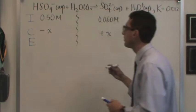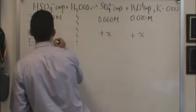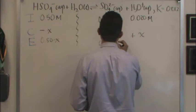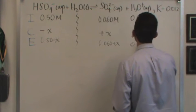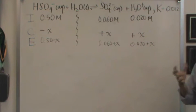The E line is just the sum of the I and the C lines. So I'm just going to literally add those two lines together to get this third line here. All right, and now I've completed my ICE table. This is the first step in my calculation.